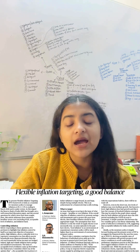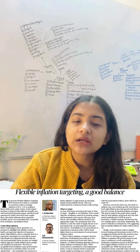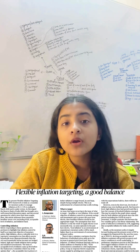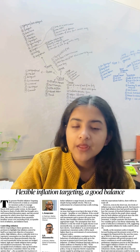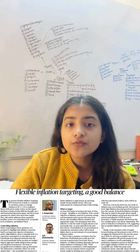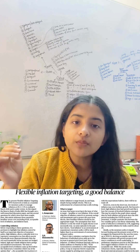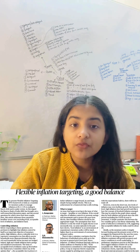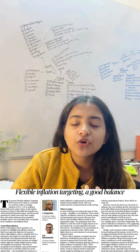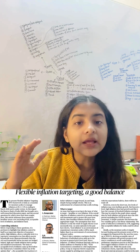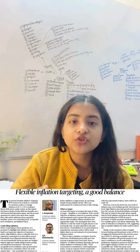But the challenge is: what exactly should we target? Should the RBI target headline inflation, which includes food, or core inflation, which excludes food and fuel? Here's the interesting part — episodes of food inflation don't always come from supply problems alone. In periods of economic expansion, food inflation can shoot up for completely different reasons. This is why some economists believe targeting headline inflation actually captures more real-world dynamics.